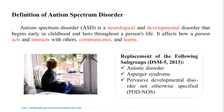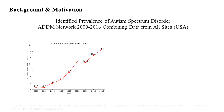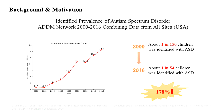ASD is a replacement of three subgroups as of 2013. This line chart shows the identified prevalence of ASD from 2000 to 2016 in the USA, and the prevalence has increased by 178% in 16 years.